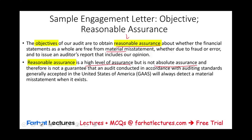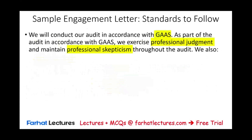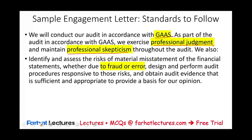Our audit will be conducted according to U.S. GAAS, and misstatements can arise from both fraud or error. We must also explain the difference between fraud and error. When we follow GAAS, we exercise professional judgment and maintain professional skepticism throughout the audit. We also identify and assess the risk of material misstatement whether due to fraud or error, and we must explain why fraud is harder to detect — because people committing fraud try to hide their tracks, whereas with an error, by its nature, there is no attempt to conceal it.